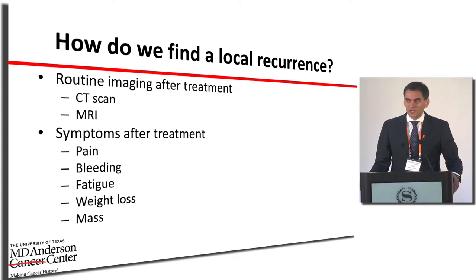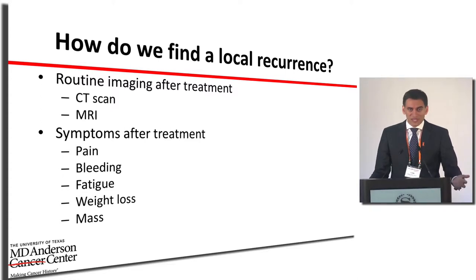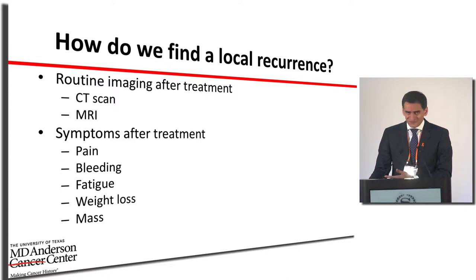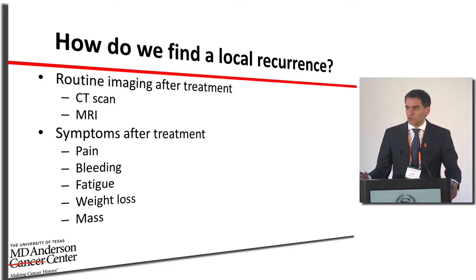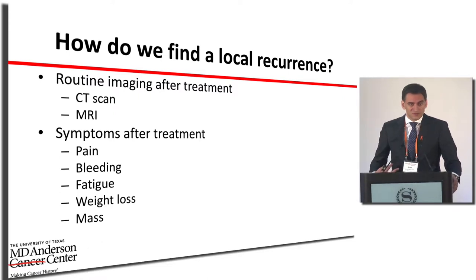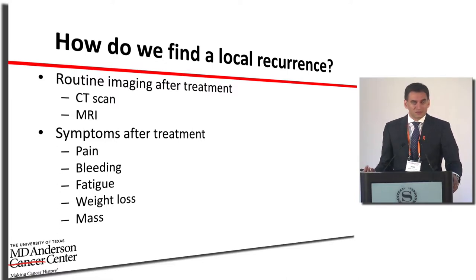The other way recurrence is found is through symptoms. If a patient has new pain in the area of surgery, unexpected bleeding, sudden fatigue, unexplained weight loss, or a palpable mass in the abdomen — these are signs you should bring up to your doctor immediately to make sure they're not related to the previously treated cancer.